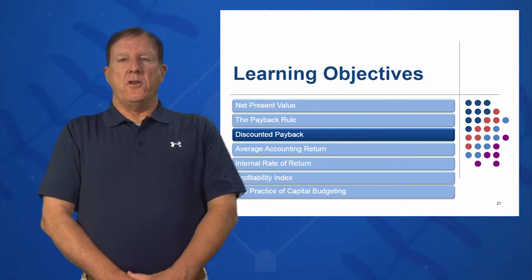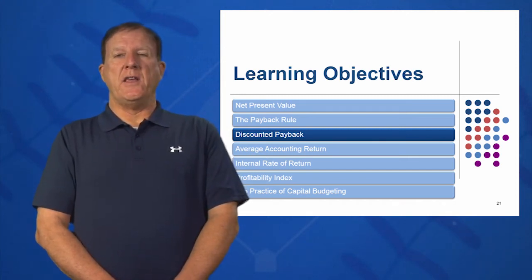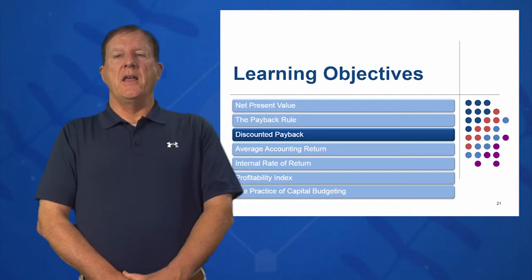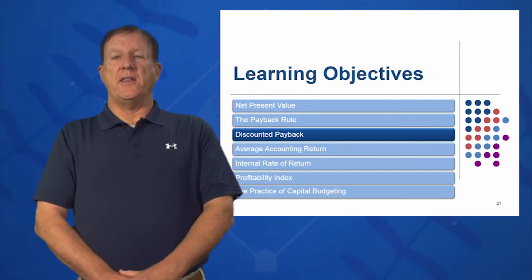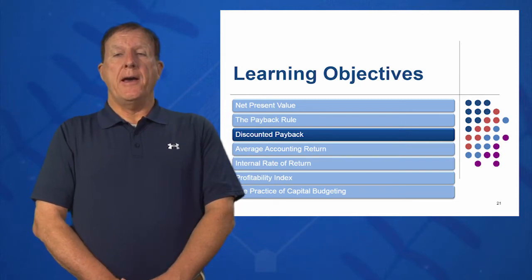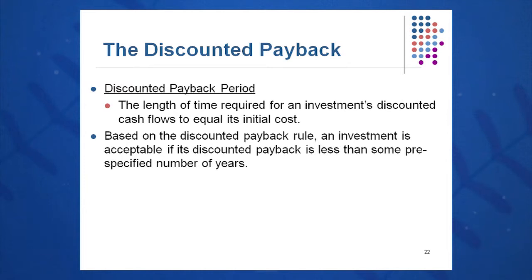In learning objective three, we're going to calculate discounted payback. This time we're going to discount the cash inflows and compare that to the initial cash outflow to figure out how many years it takes to pay back the initial investment. Discounted payback is very similar to regular payback, except we discount the cash flows first and then find out when the discounted cash flows equal the initial cost.